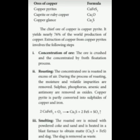In copper pyrite ore, impurities like sulfur, phosphorus, arsenic, and antimony combine with excess oxygen and are removed as oxides. Copper pyrite is partly converted into sulfides of copper and iron — copper sulfide and iron sulfide — along with sulfur dioxide. The roasted ore is then mixed with powdered coke (carbon) and sand, and heated in a blast furnace to obtain matte. Matte is a mixture of Cu₂S and FeS, and the slag (waste impurities) is removed.